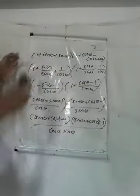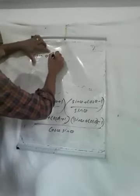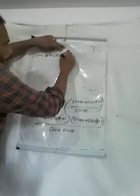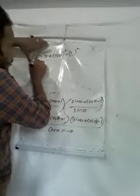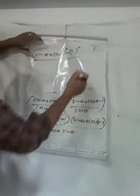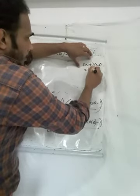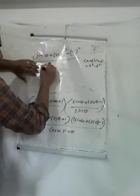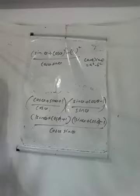Now, this is in the form of (a + b)(a − b). So sin θ + cos θ is 'a' and 1 is 'b'. Therefore (a + b)(a − b) = a² − b², which gives (sin θ + cos θ)² − 1², divided by cos θ × sin θ.